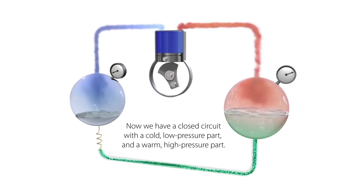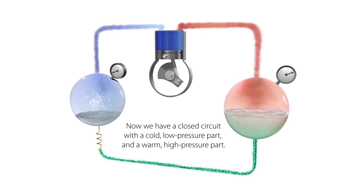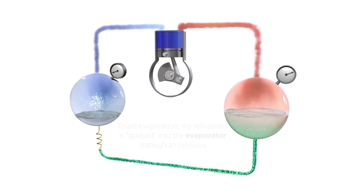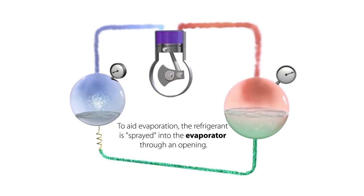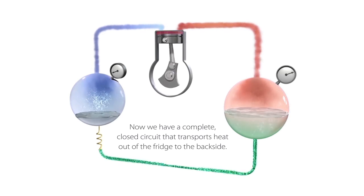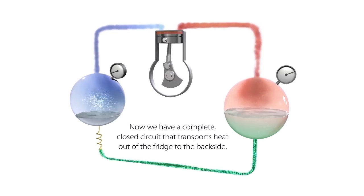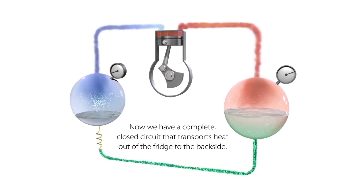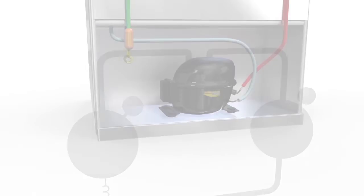Now we have a closed circuit with a cold, low-pressure part and a warm, high-pressure part. To aid evaporation, the refrigerant is sprayed into the evaporator through an opening. Now we have a complete closed circuit that transports heat out of the fridge to the backside.